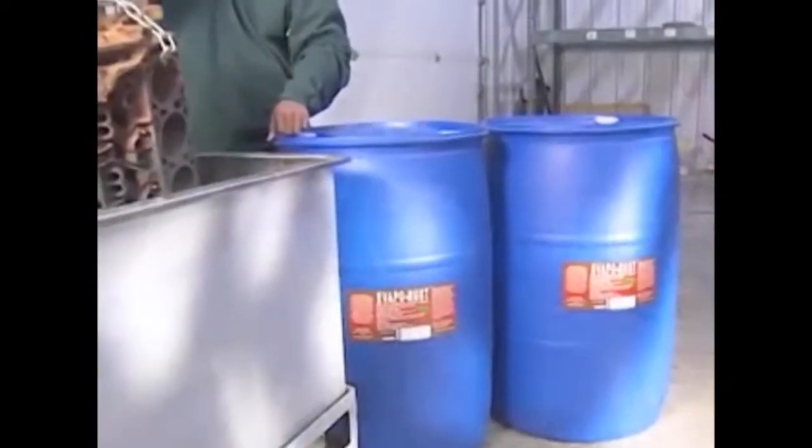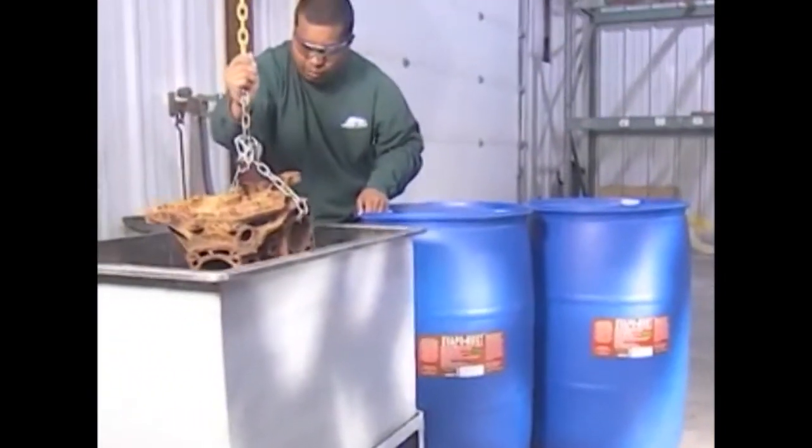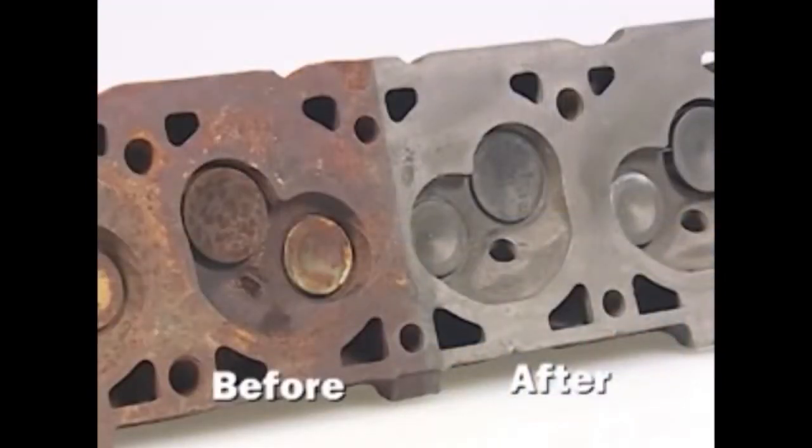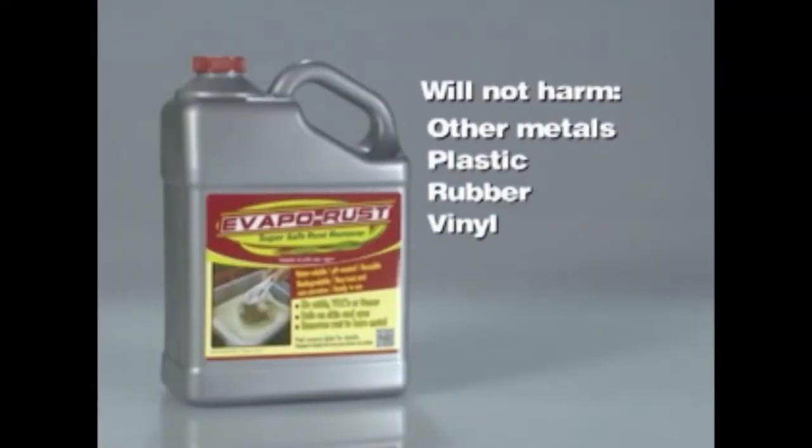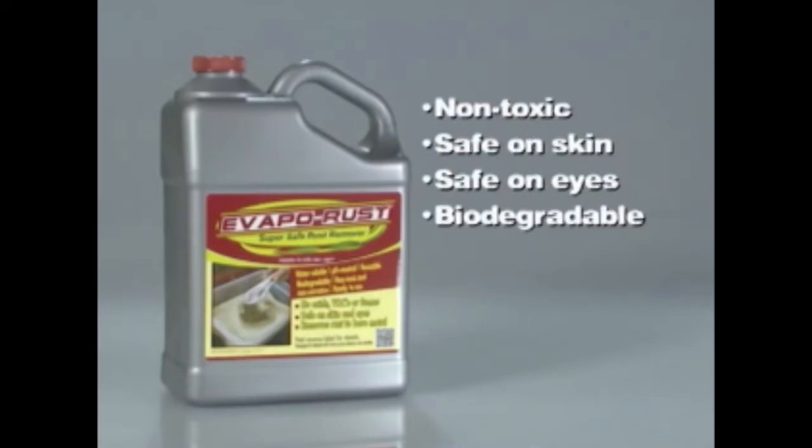Evaporust will quickly and effectively remove even deep rust on all types of mild steel and iron. It will not harm other metals, plastic, rubber, or vinyl.